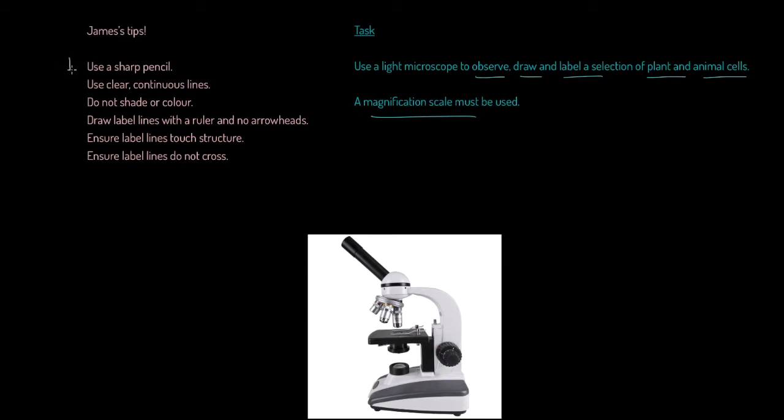Here's what you're going to do. Number one, you are going to use a sharp pencil. Rummage around in that pencil case, find that pencil sharpener, get that pencil nice and sharp. Secondly, you must use clear, continuous lines. Thirdly, do not shade or color. We're going to be drawing an outline image in this environment.